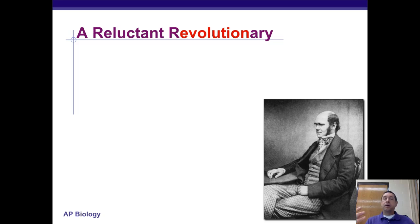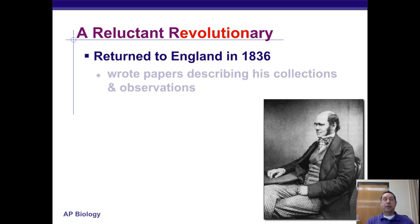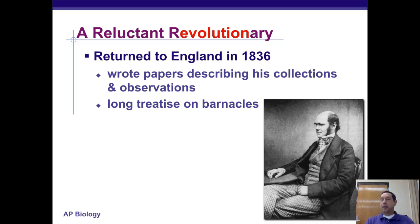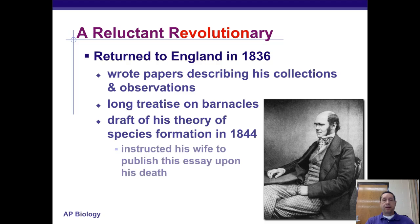Darwin knew his ideas would be met with significant resistance. He returned to England in 1836, wrote papers describing his collections and observations — including different kinds of barnacles — and made a draft of his theory of species formation in 1844. He was so cautious that he told his wife to publish it only after he was dead.